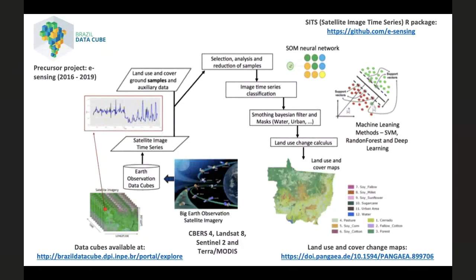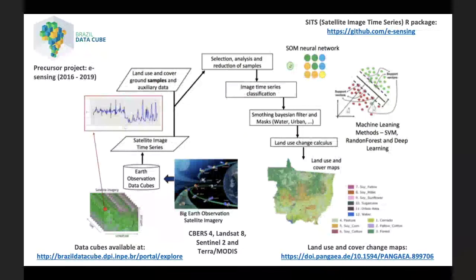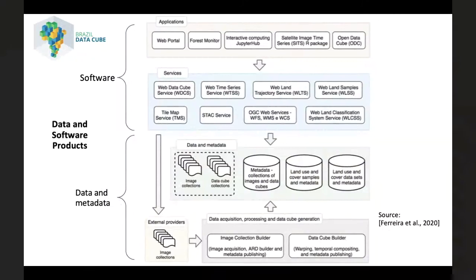We are also developing and using neural networks to analyze land use and cover ground samples, and machine learning methods to create land use and cover maps from time series extracted from these data cubes. These methods are available in our package called SEATS, available on a GitHub website. We started to work on this workflow in 2016, in a precursor project called ESSENSI. In the project, we are producing data and software products. The data products include analysis-ready image collections, multidimensional data cubes from these images, land use and cover samples, and the metadata of all these datasets. The software products include web services to access and process all datasets, and applications with graphical interfaces for final users.